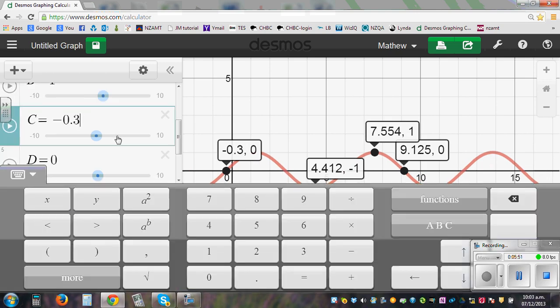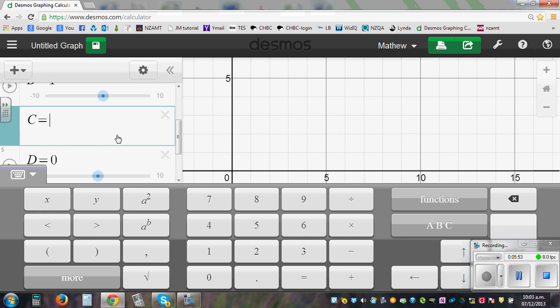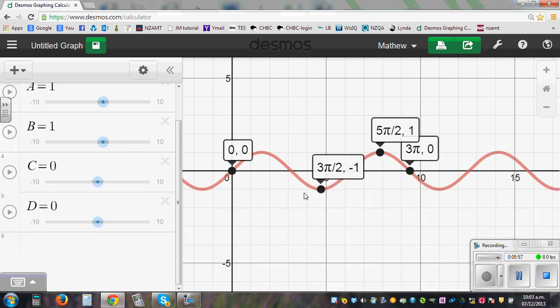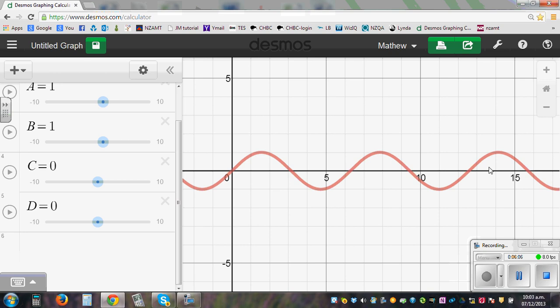So let me again make it 0 there. And so this is the basic sine graph. Let me remove this point so that you can see. So this is 1 cycle from 0 to 2 pi.